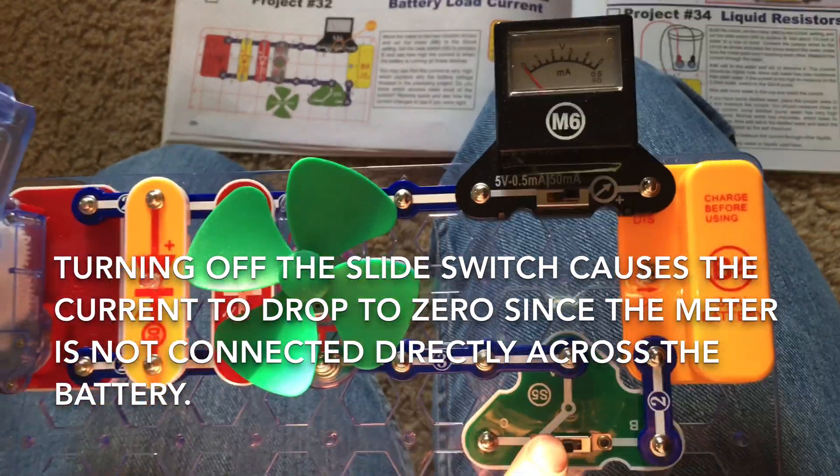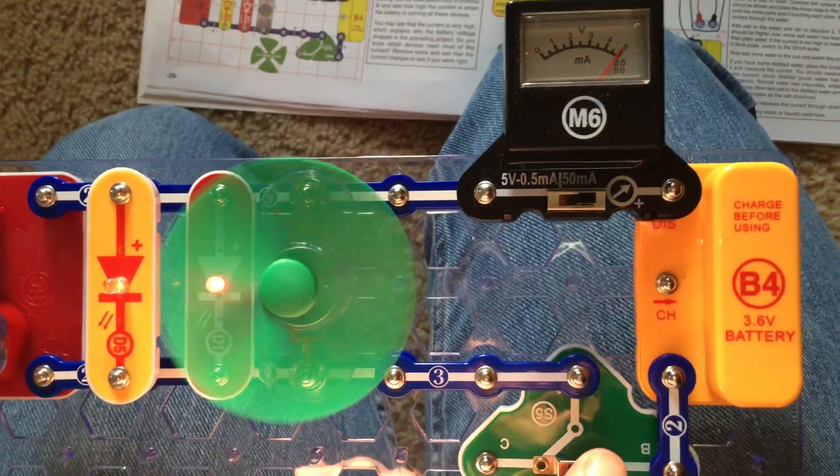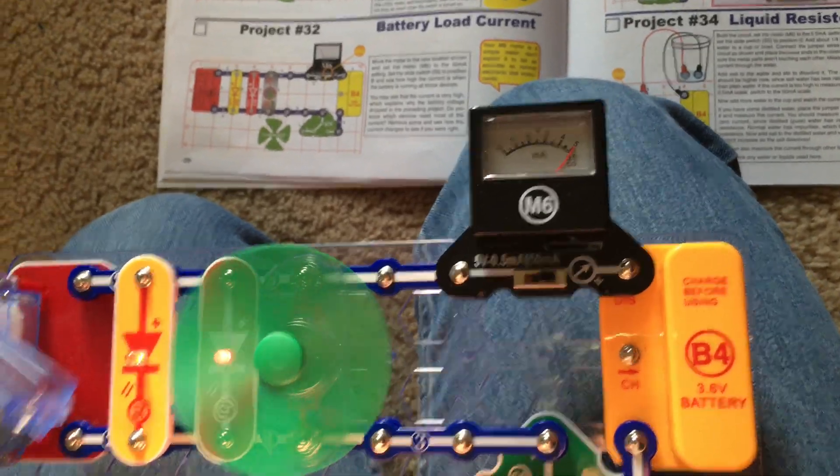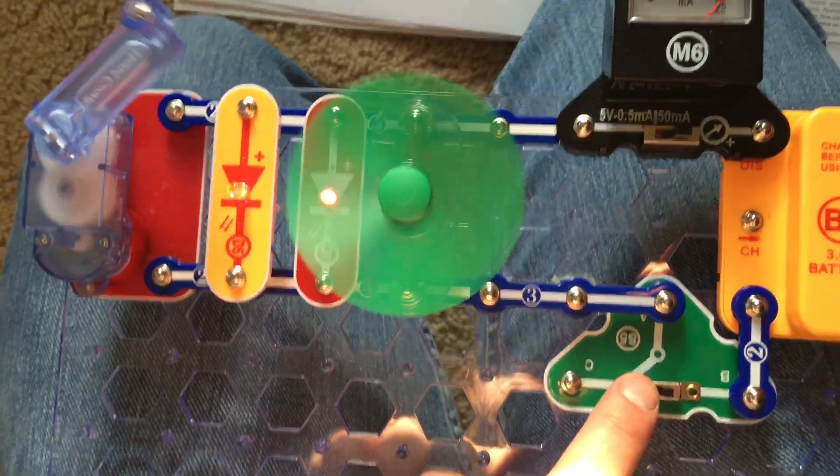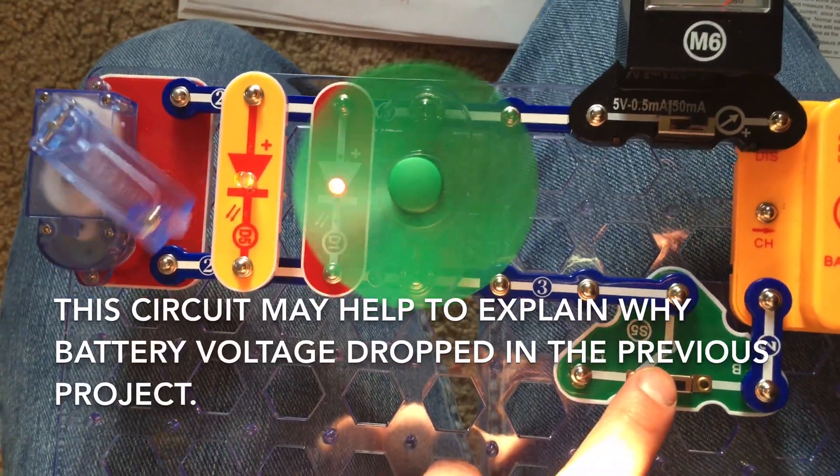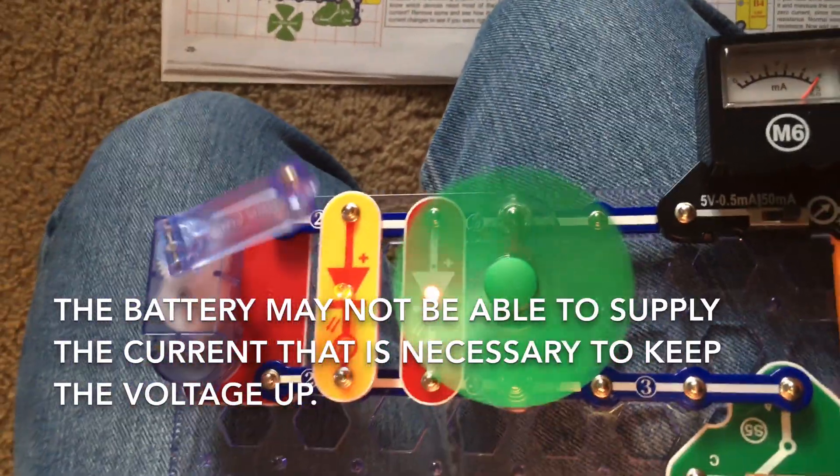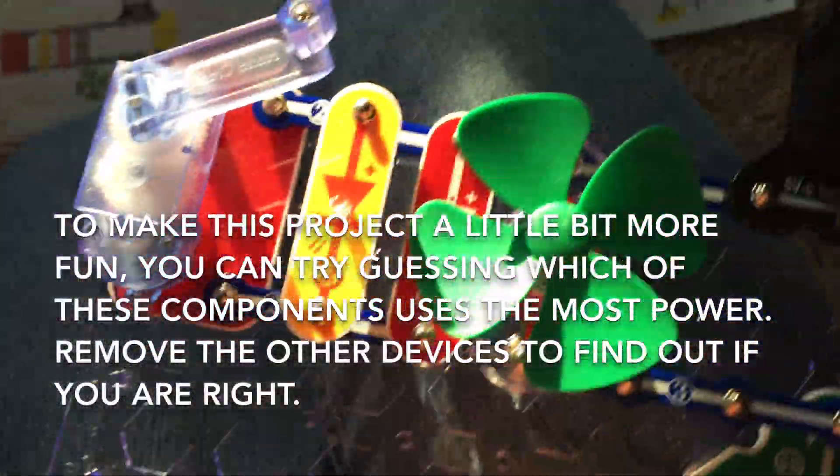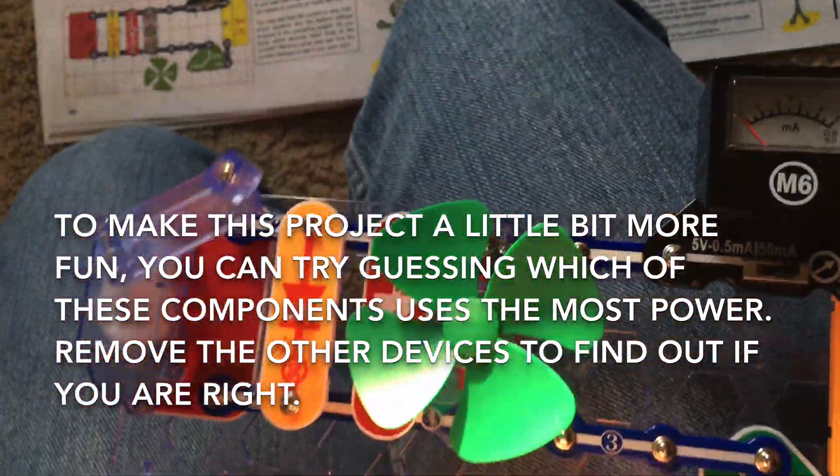In this circuit, the voltage meter can only receive current when the slide switch is on. In the previous circuit, it was directly receiving current from the battery regardless of whether the slide switch was on. This circuit helps explain why the battery voltage dropped in the preceding project. The battery may not be able to supply as much current as the circuit needs. Now you can guess which devices need the most current and remove the others to see if you're right.